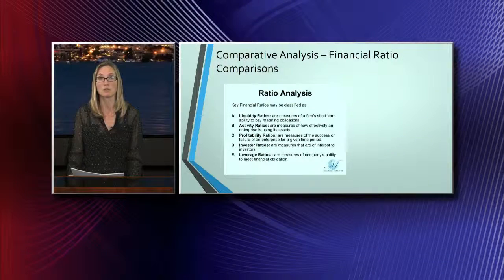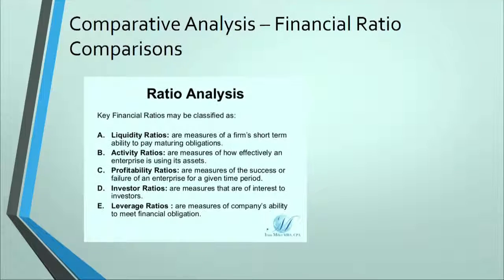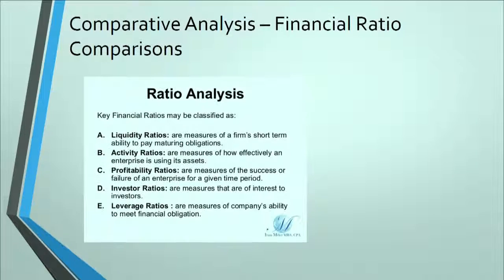We're going to move forward and talk about financial ratio comparisons and the different types of ratio analysis that you can conduct. First would be the liquidity ratios — these are measures of the firm's short-term ability to pay maturing obligations. The activity ratios are measures of how effectively an enterprise is using assets. Profitability ratios are measures of success or failure given a certain time period. Investor ratios are measures of interest specifically to investors, and leverage ratios are measures of the company's ability to meet their financial obligations.